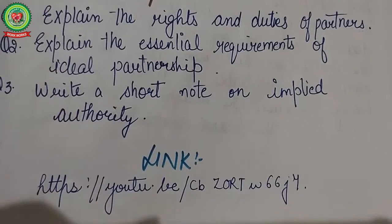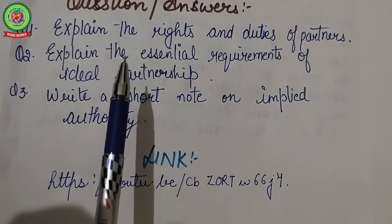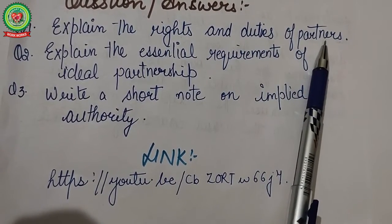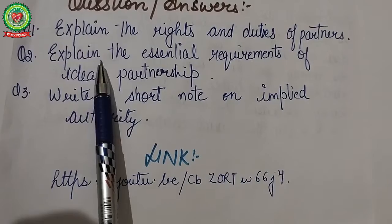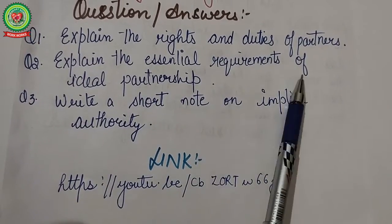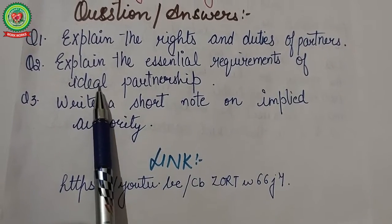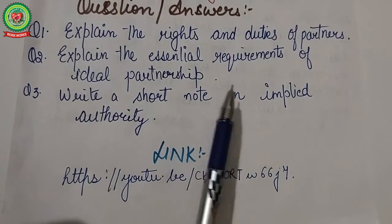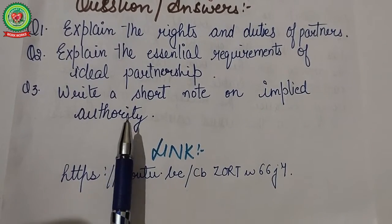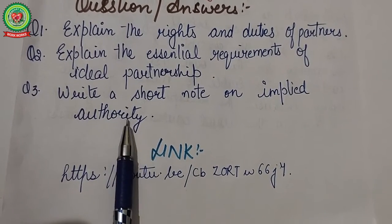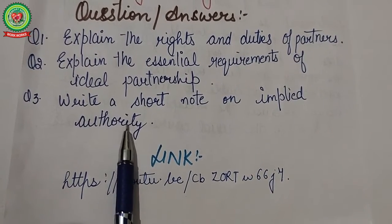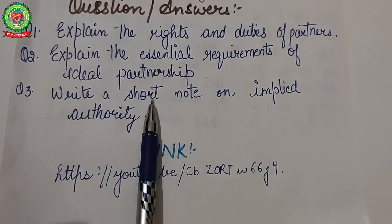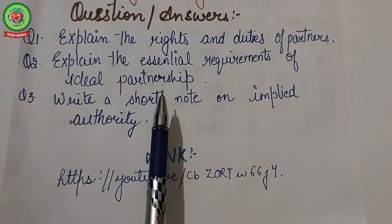So this is all about today's topics. Now you have to write the following questions: first, explain the rights and duties of partners; second, explain the essential requirements of ideal partnership; and third, write a short note on implied authority of a partner. Also go through the various links so that you can write answers for these questions.